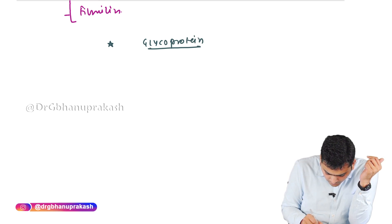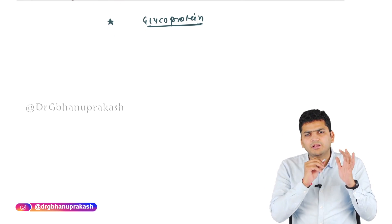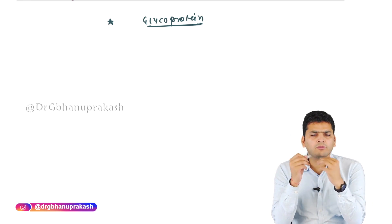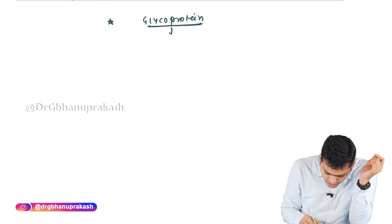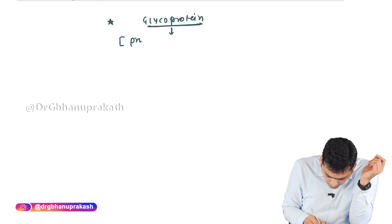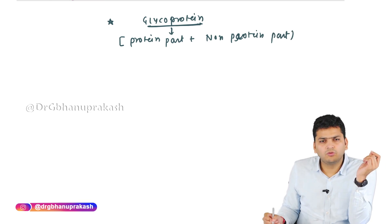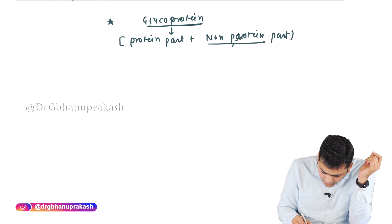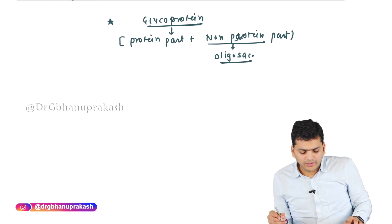The second concept is related to glycoprotein. When we discussed the classification of proteins, I mentioned that proteins can be conjugated or unconjugated. Glycoprotein belongs to the conjugated protein, meaning there is a protein part as well as a non-protein part. The non-protein part is a carbohydrate called oligosaccharide, which is added onto the protein molecule to make the glycoprotein.